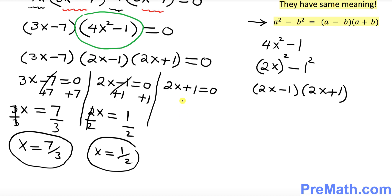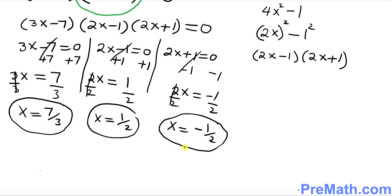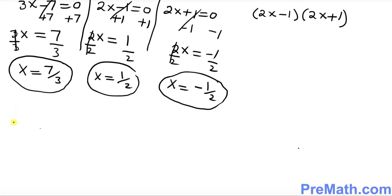I want you to subtract 1 from both sides. This is gone. So you got 2x equal to negative 1. I want you to divide both sides by 2. So x turns out to be negative 1 over 2.